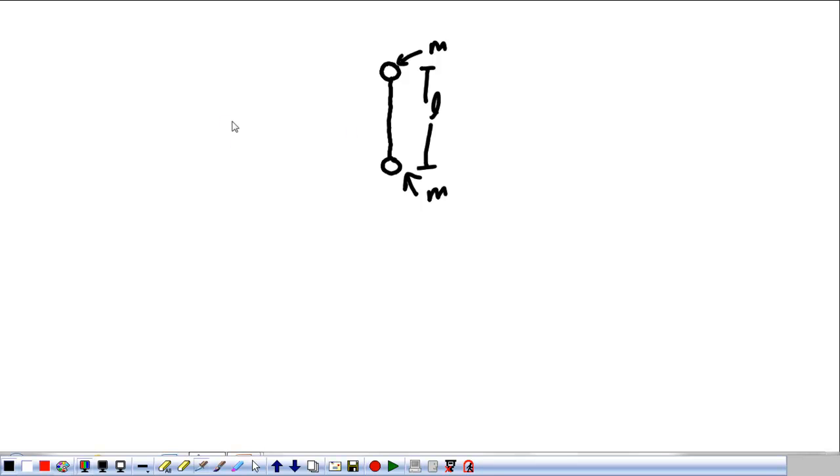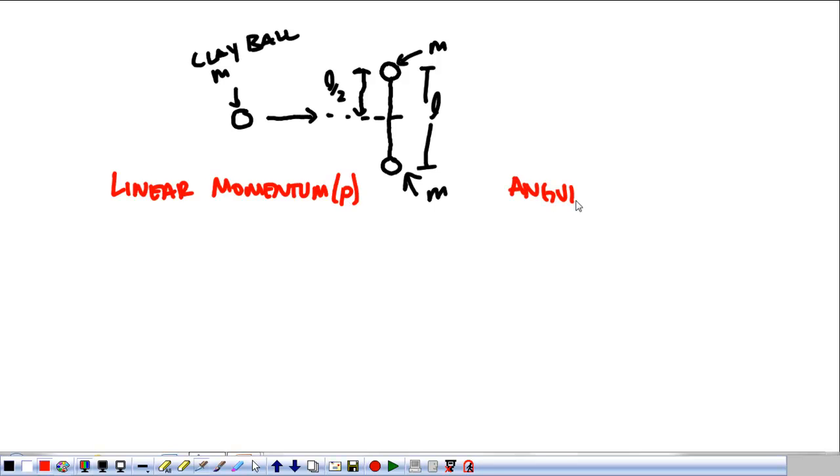We're going to throw a clay ball, also mass M. We're going to throw this clay ball at the center of the thing. So when it hits, it's going to hit exactly at L over 2. And so what we want to look at is how this object moves afterwards. And the things that we have to consider are linear momentum, that's a P, and angular momentum, that's a capital L.